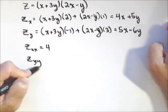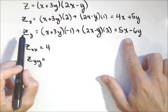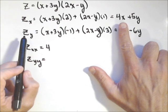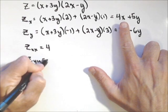Z sub yy is going to be real similar. I'm going to take the derivative of this guy with respect to y, so that's a constant, so it's negative 6.